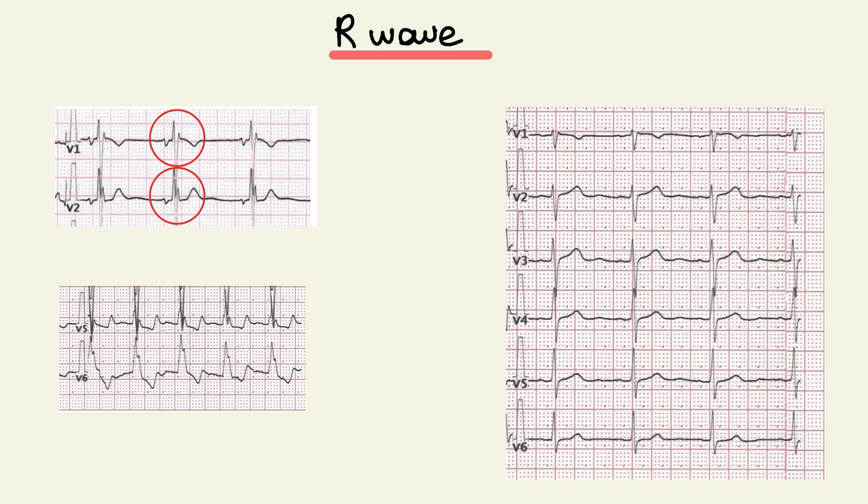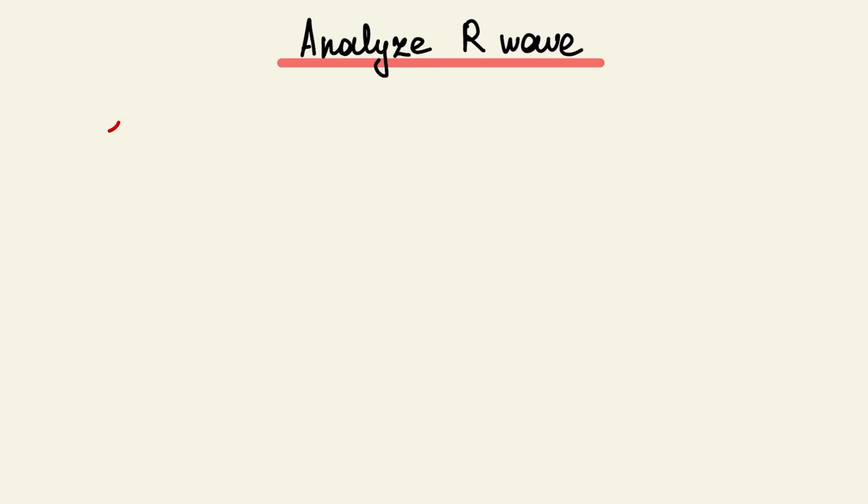R wave represents ventricular depolarization. R wave grows from V1 to V4. And we analyze form of R wave at lead V1 and V2 for diagnosis of right bundle branch block. And V5 and V6 for diagnosis of left bundle branch block. We analyze R wave at leads 1, 2, and 3 for interpretation electrical cardiac axis. Watch my previous videos about this.